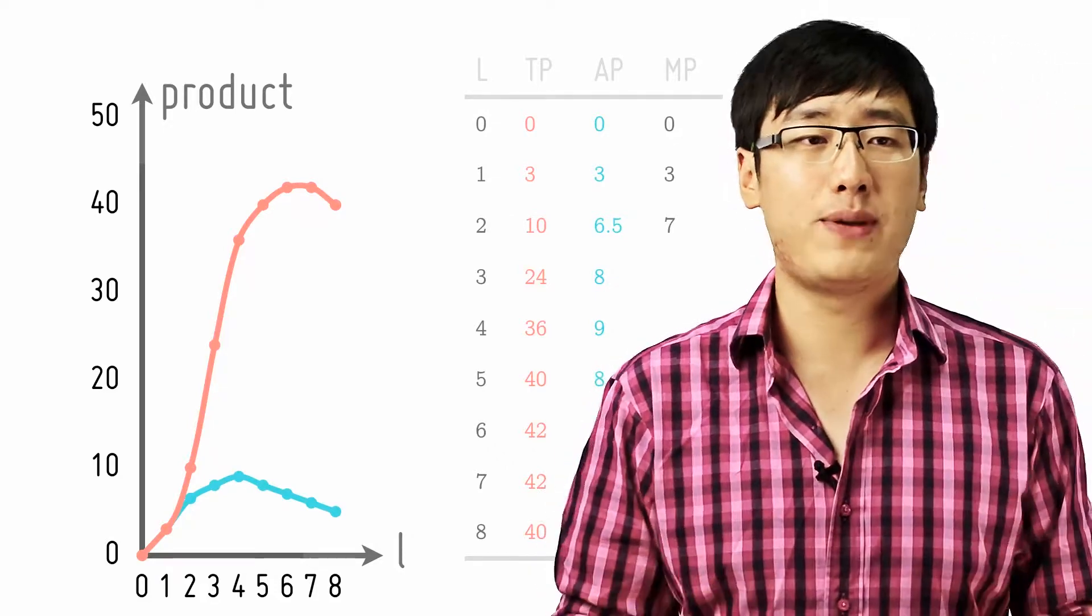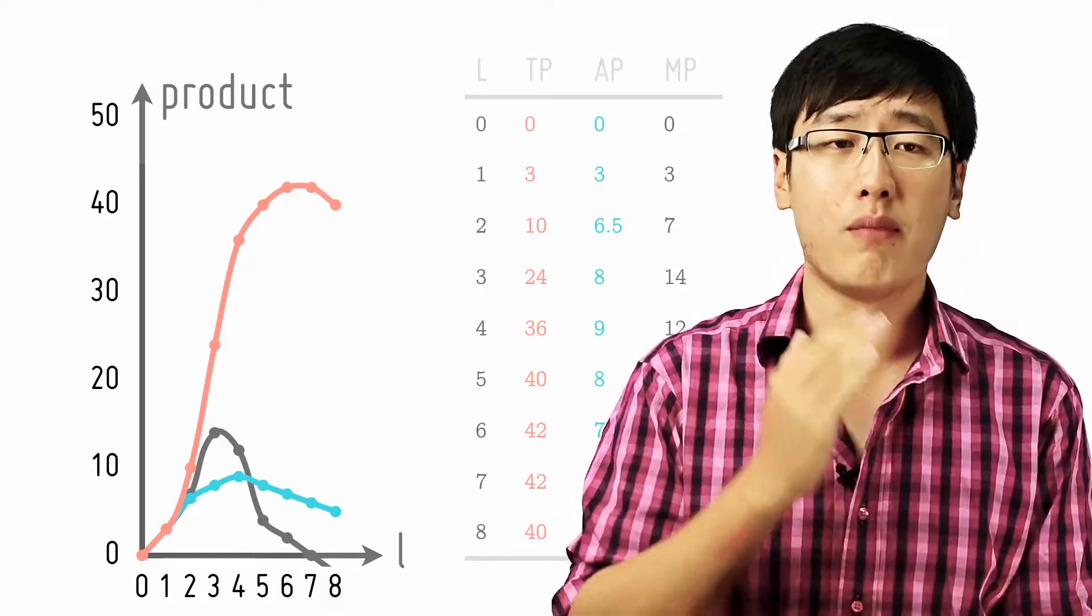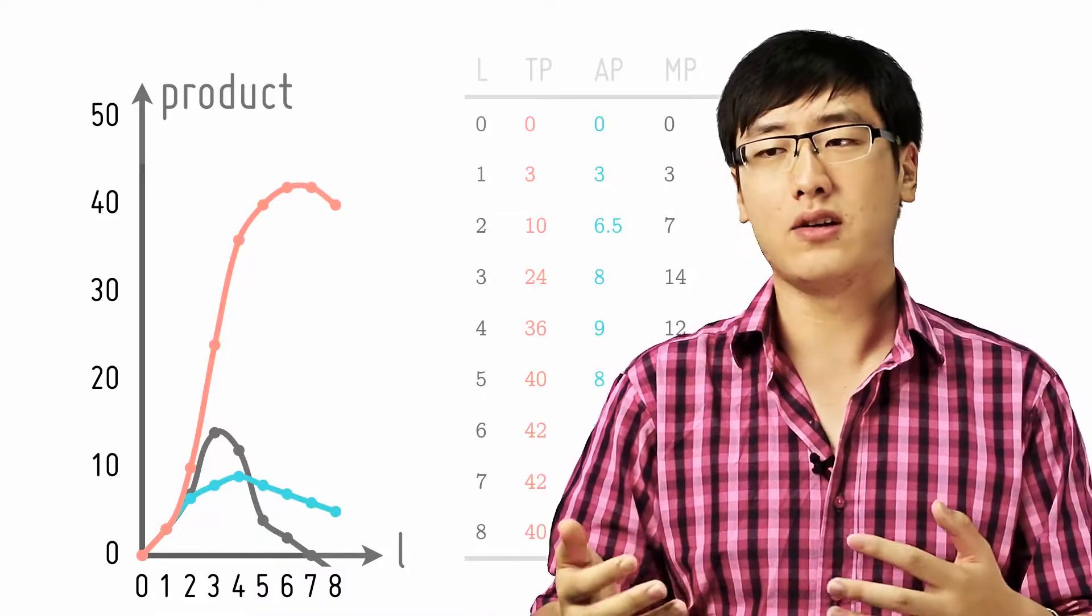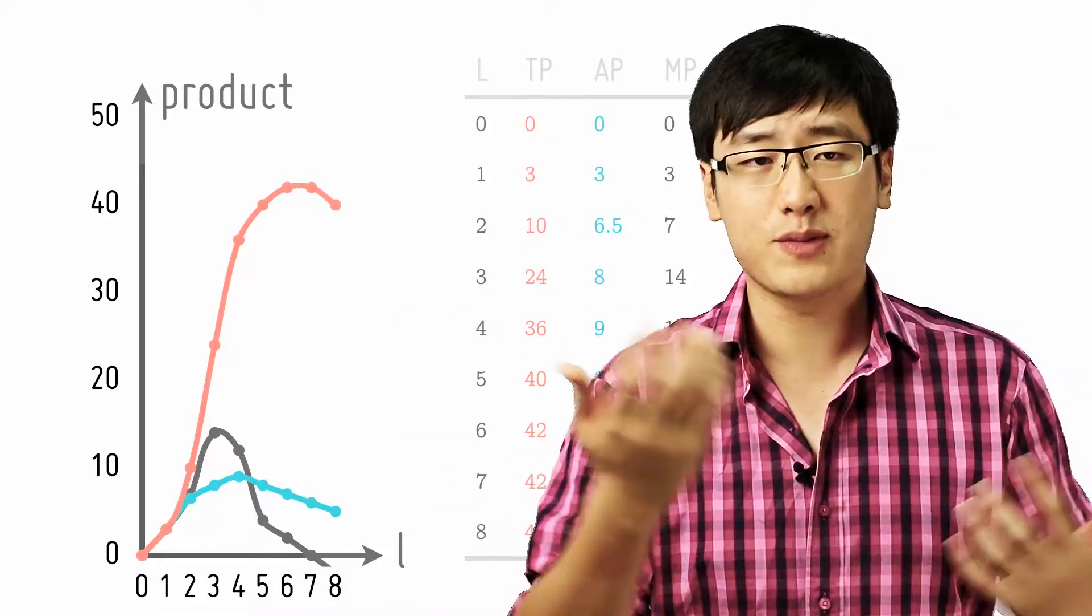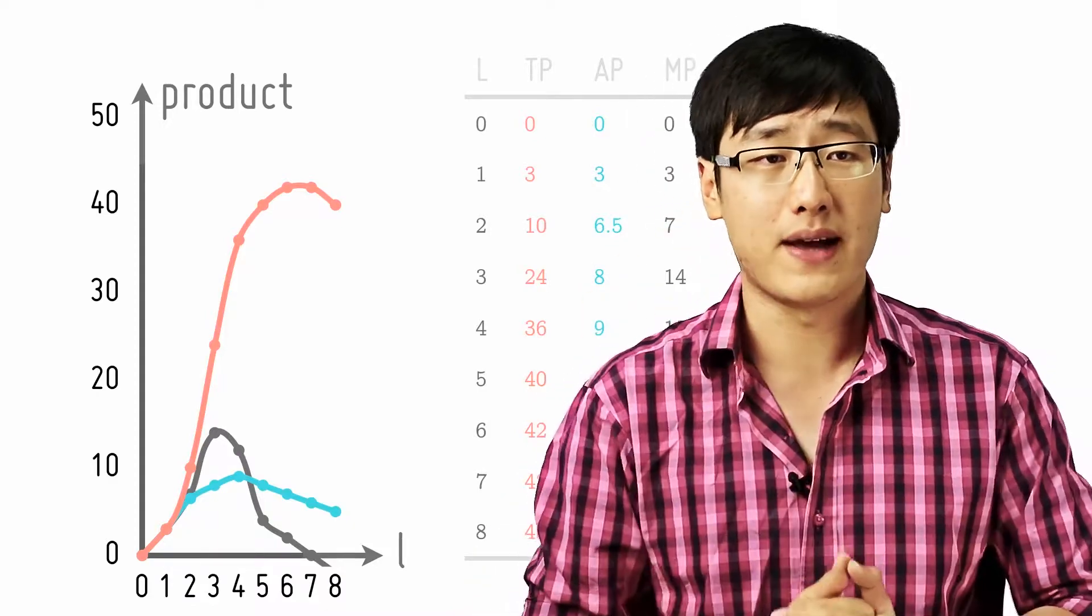You see that the marginal product peaks at 3 workers. Why is that? Because it is the third worker that brings the most additional units. He doesn't cause the total product or the average product to peak, but he brings in the most additional amount, units of iPads.